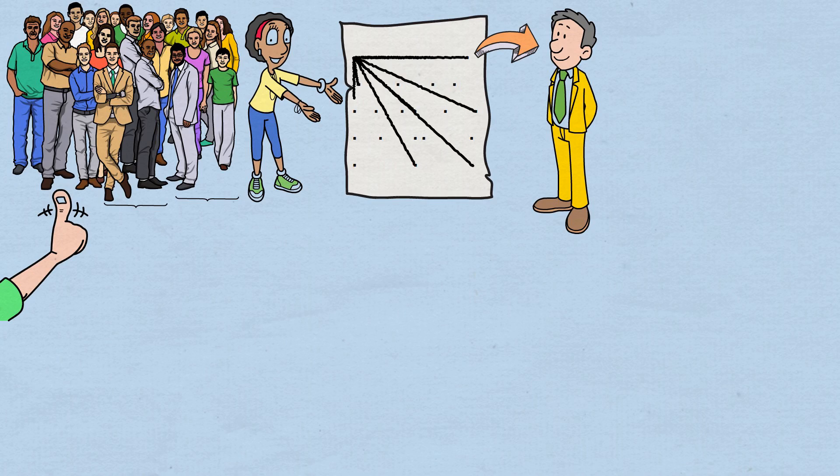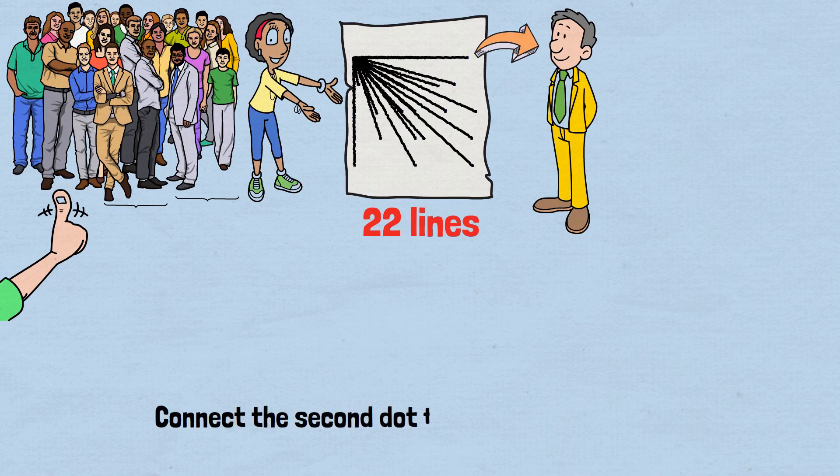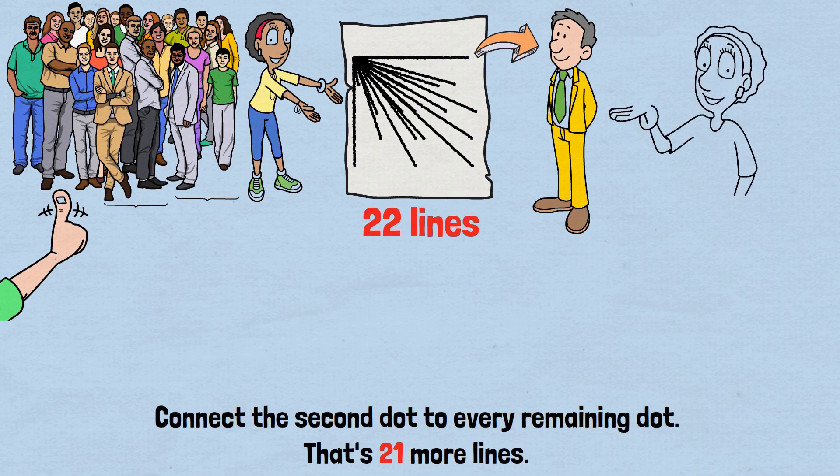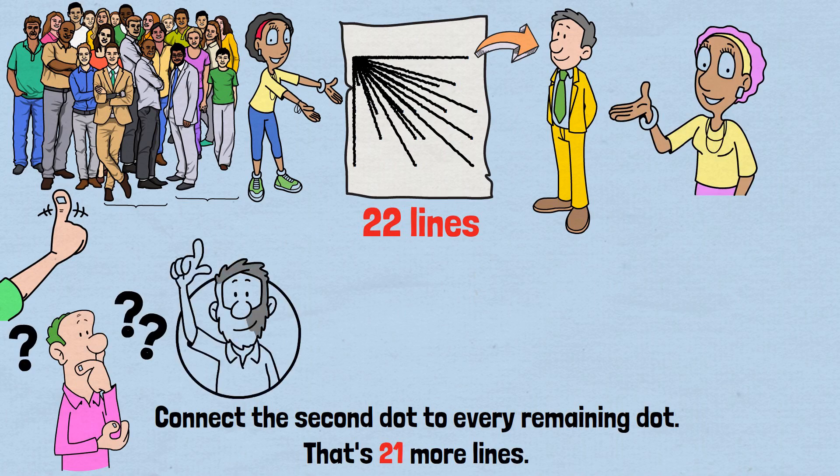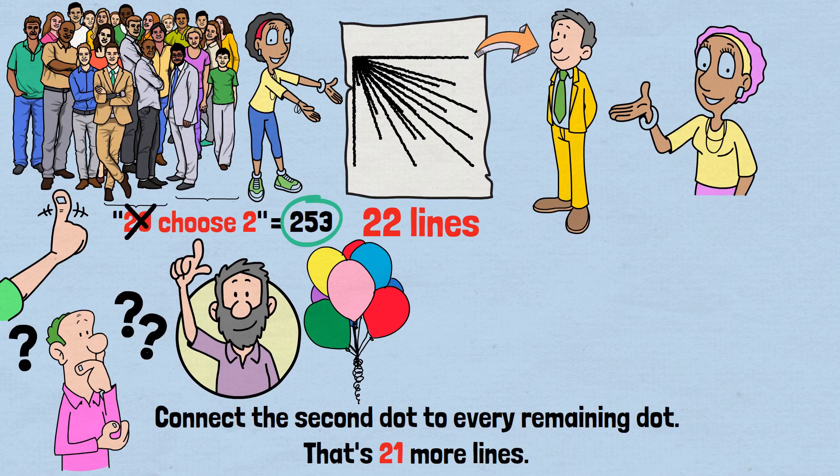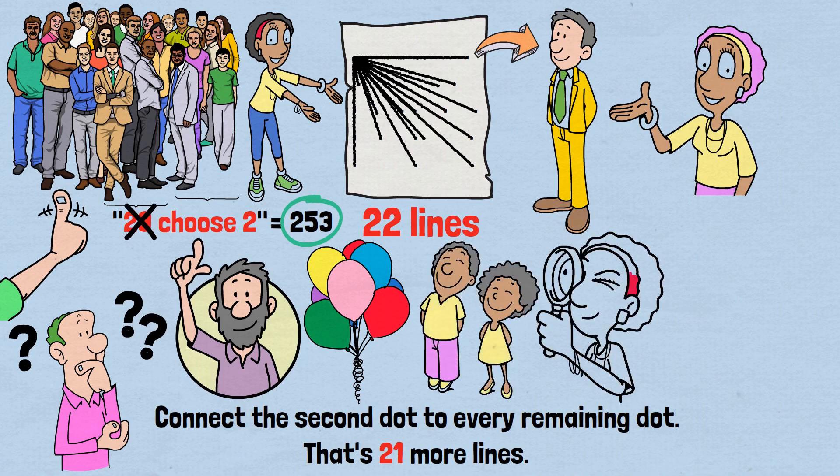Now, draw a line connecting the first dot to every other dot. That's 22 lines. Then connect the second dot to every remaining dot. That's 21 more lines. Keep going with each dot. In the end, how many lines would you draw? The total number of possible pairs among 23 people is 23 choose 2, which equals 253 different pairs. That's 253 different chances for a birthday match, not just 23. Each of those pairs could potentially share a birthday. When you see it this way, the probability no longer seems so small, does it?